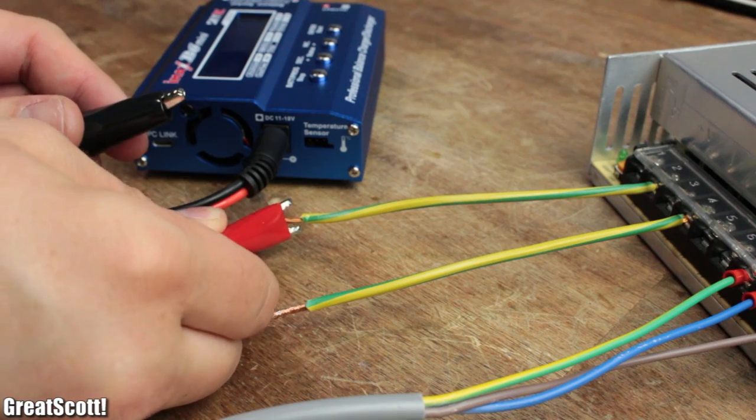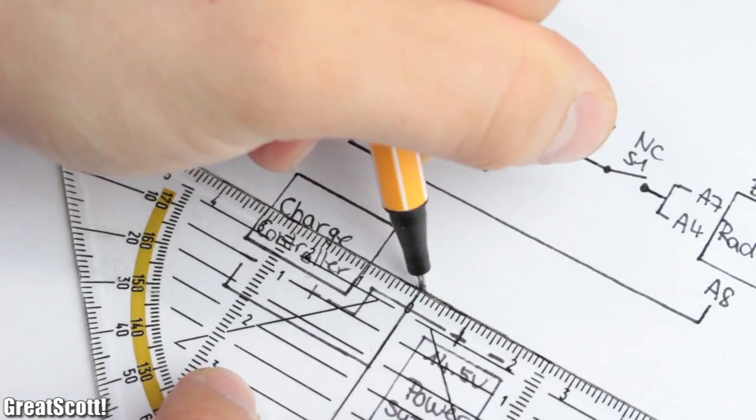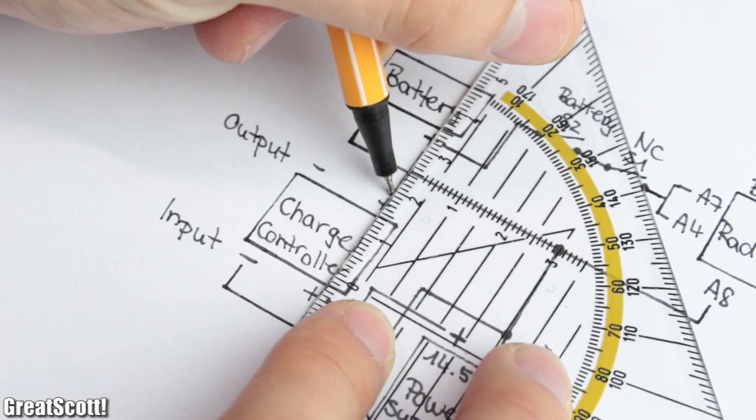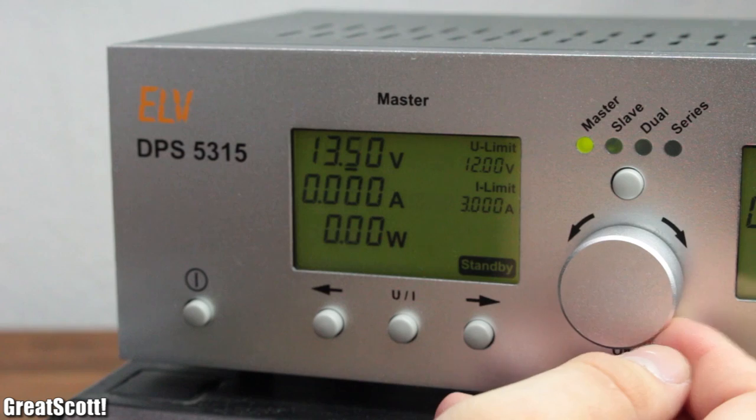Next I connected the output of the power supply to the input of the charging controller and that outputs to the battery. And if you are thinking to yourself, why not just use 14.4 volts of the power supply to charge the batteries directly?